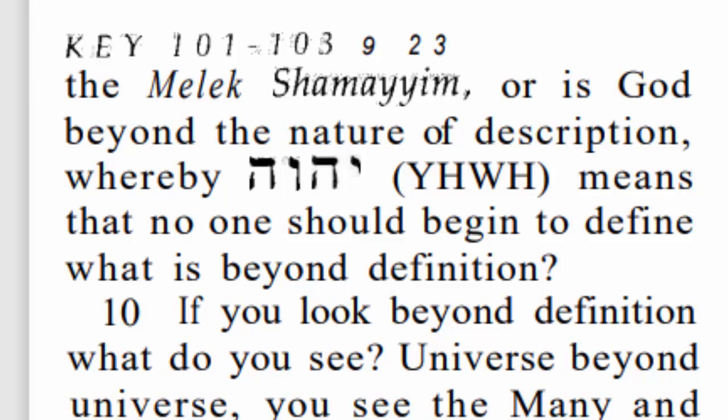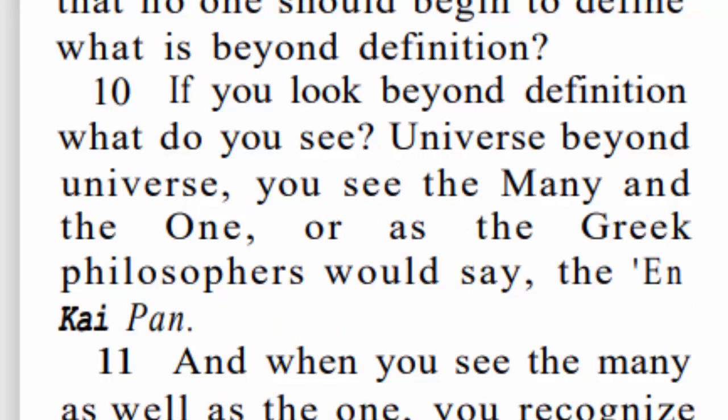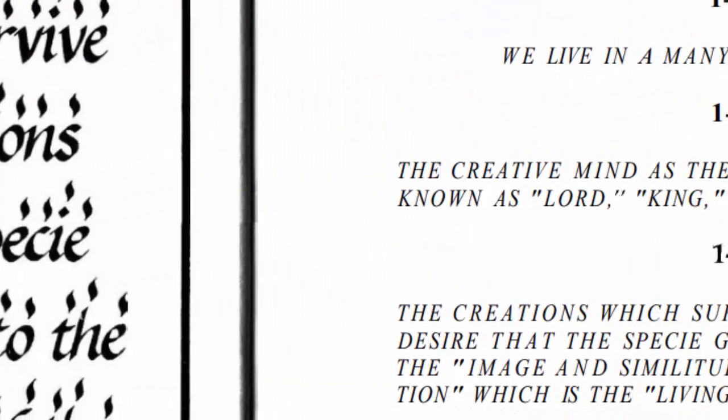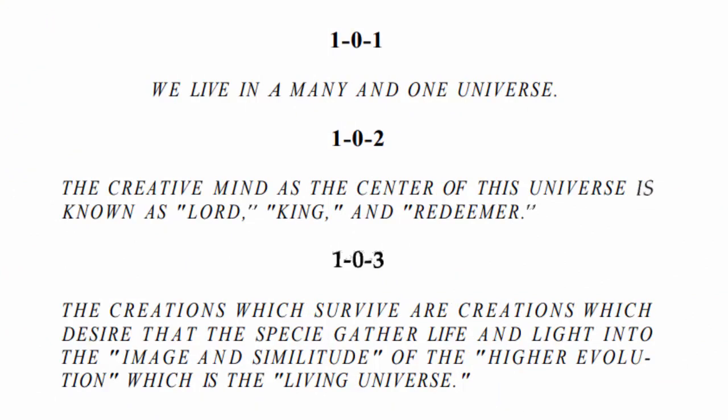Verse 10 says if you look beyond definition, what do you see? Universe beyond universe — the many and one, or as the Greek philosophers would say, the en kai pan. This explains why the book starts off with the very first key explaining that we live in a many-and-one universe, and also lends understanding to why there are so many other gods or Elohim mentioned in scripture. The first commandment in Exodus 20 says you will put no other god before me — which lets us know there are other gods.